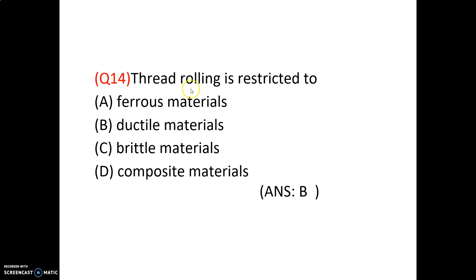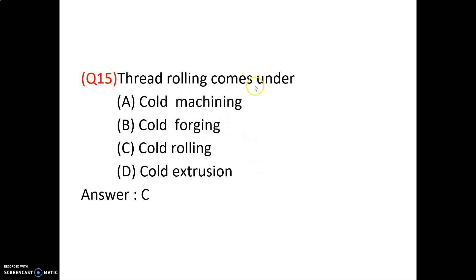Thread rolling is restricted to ductile materials — it cannot be applied to other materials. So option B is correct. Thread rolling comes under cold machining, cold forging, cold rolling, or cold extrusion — it comes under cold rolling. So option C (question 15) is correct.